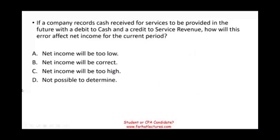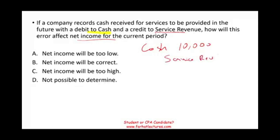Next question: if a company records cash received for services to be provided in the future with a debit to cash and a credit to service revenue, how will this error affect net income for the current period? This means the company received cash for future services — let's say $10,000 — debited cash $10,000 and credited service revenue $10,000.